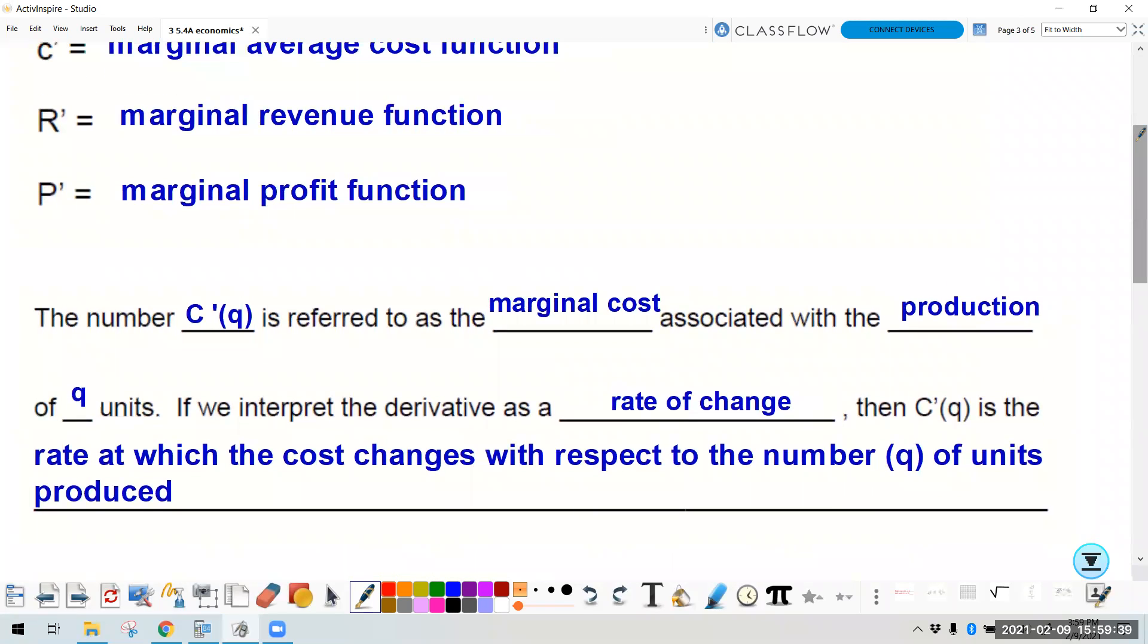And then the derivative, so C prime is referred to as the marginal cost with production of Q units. That's because derivative is a rate of change. It's that slope. So then the derivative of cost, or C prime, is the rate at which the cost changes with respect to the number of units produced. It's that rate of change. Again, pause here, pause the video so you can write that down.